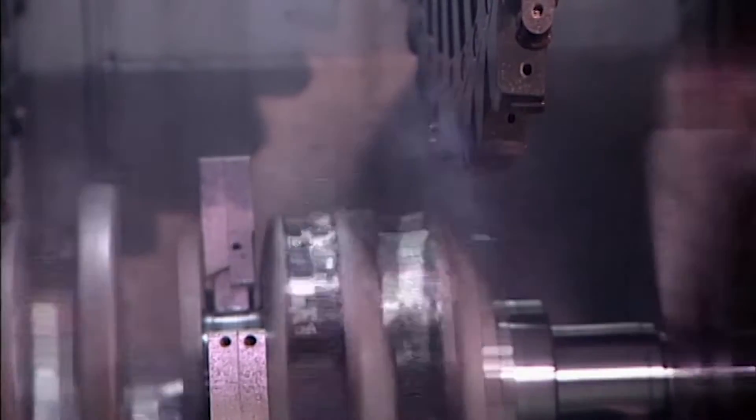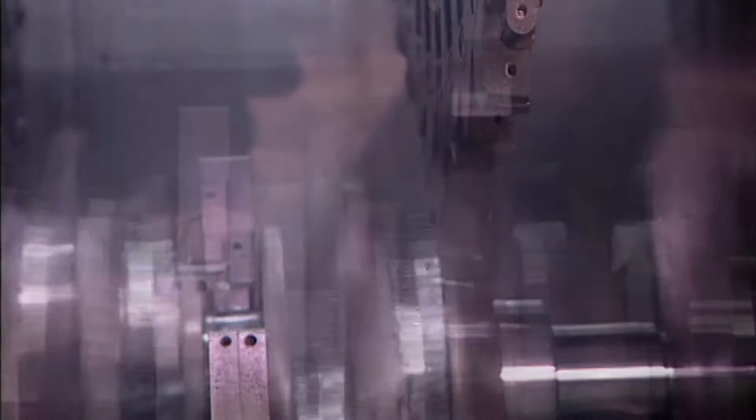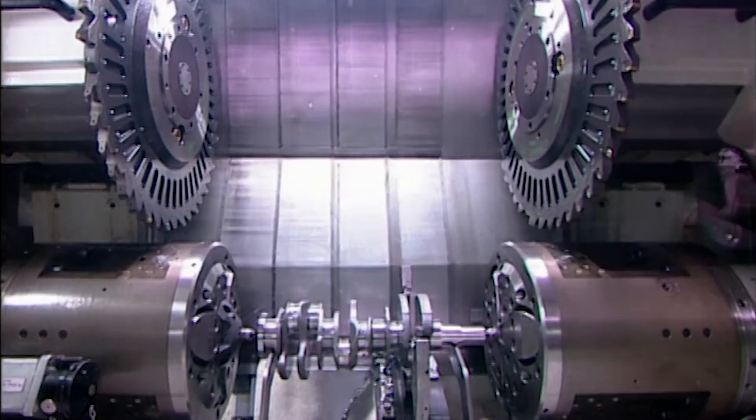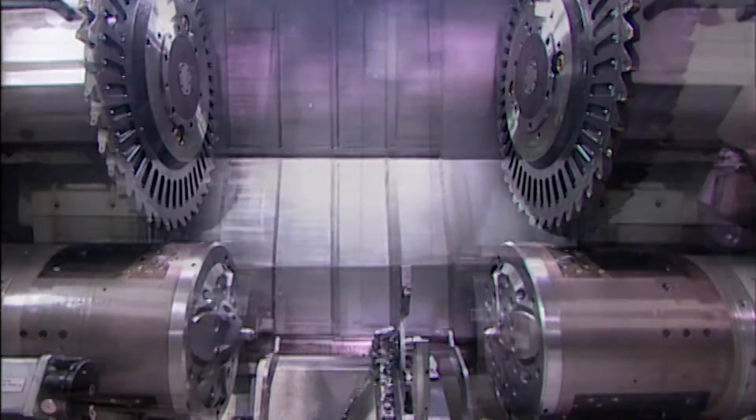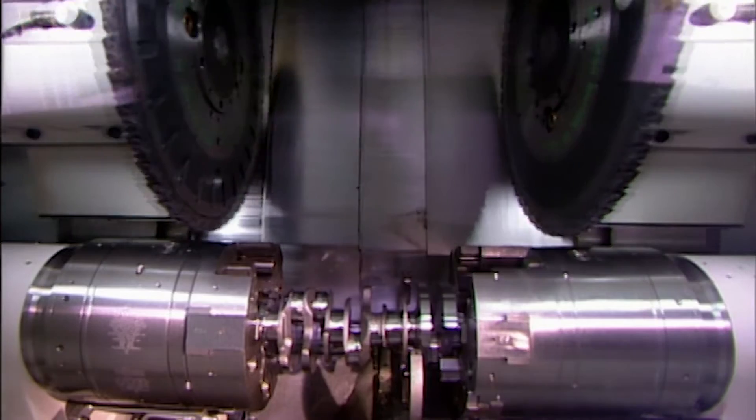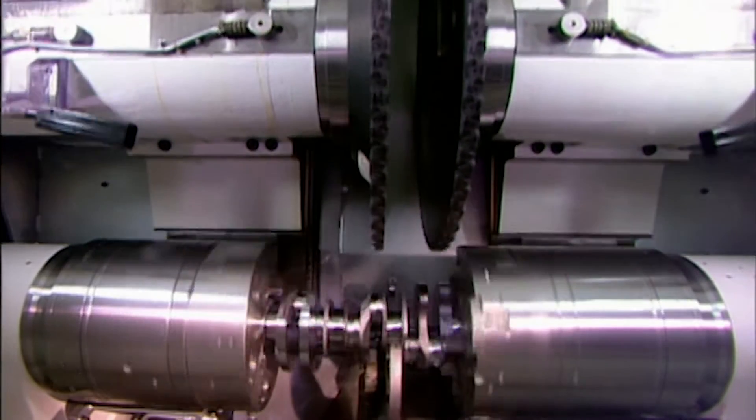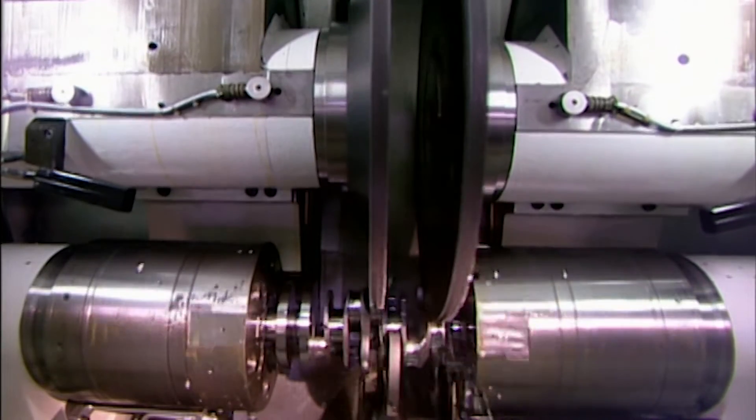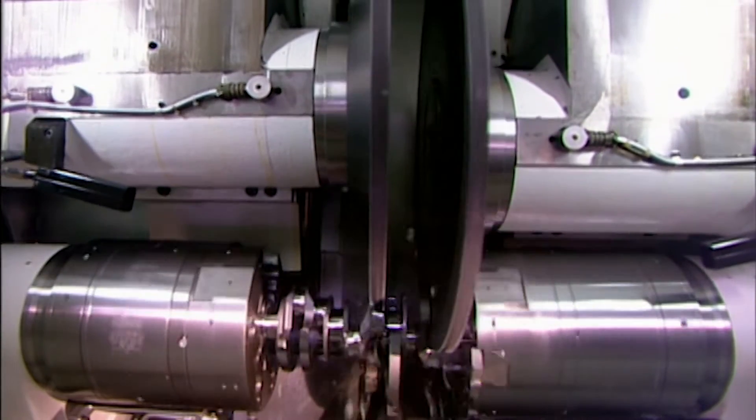Elsewhere in the factory, the crankshaft is slowly taking shape. The crankshaft is a bar that's rotated by the up and down motion of the pistons. As it turns, it transfers power to the transmission. The crankshaft starts out as a roughly shaped steel forging. Robotic arms pass it down the line from station to station, until, twenty tooling machines later, it's fully formed.